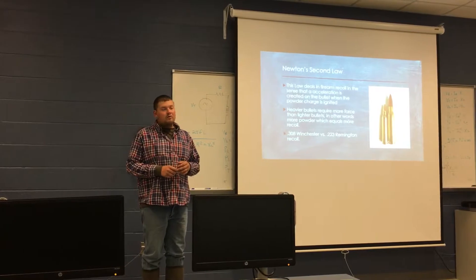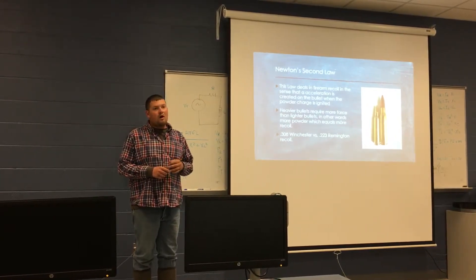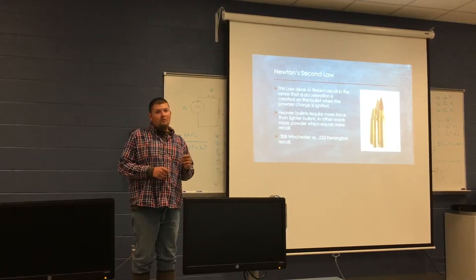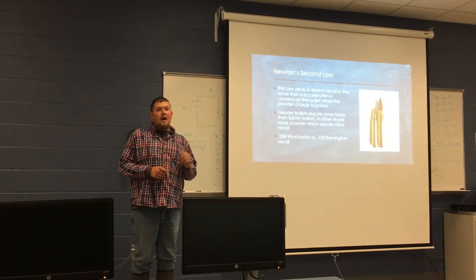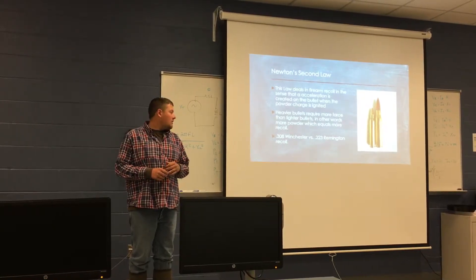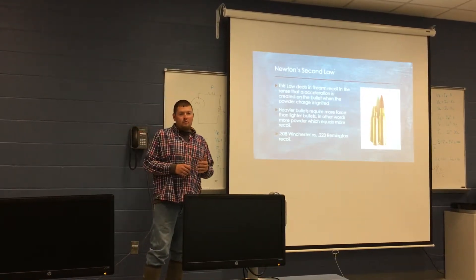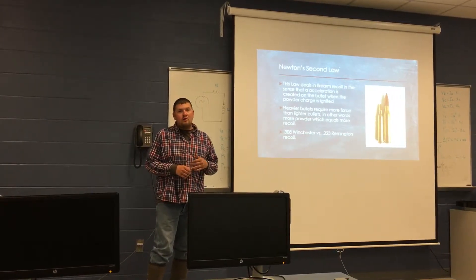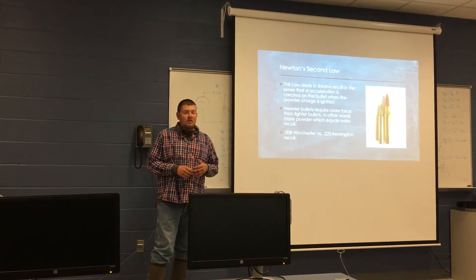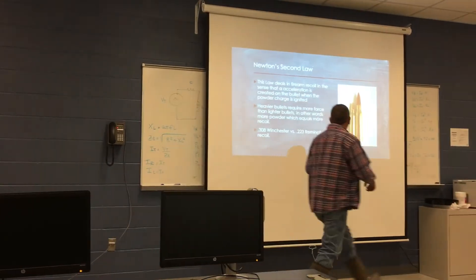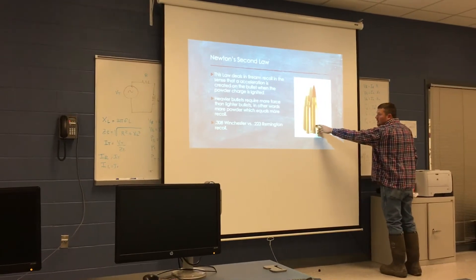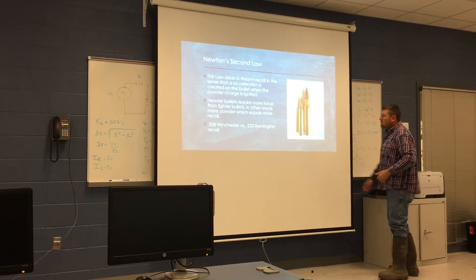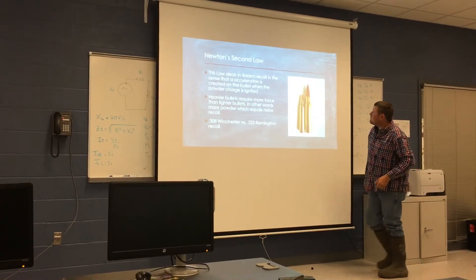Heavier bullets require more force than lighter bullets because it takes more propellant to send them downrange at an effective velocity. Take the .308 Winchester for example — it shoots a 150 grain bullet, while a .223 Remington shoots a 67 grain bullet. As you can see right here, the .308 has a larger case because it requires more powder to push the heavier bullet downrange compared to the .223 on the left.